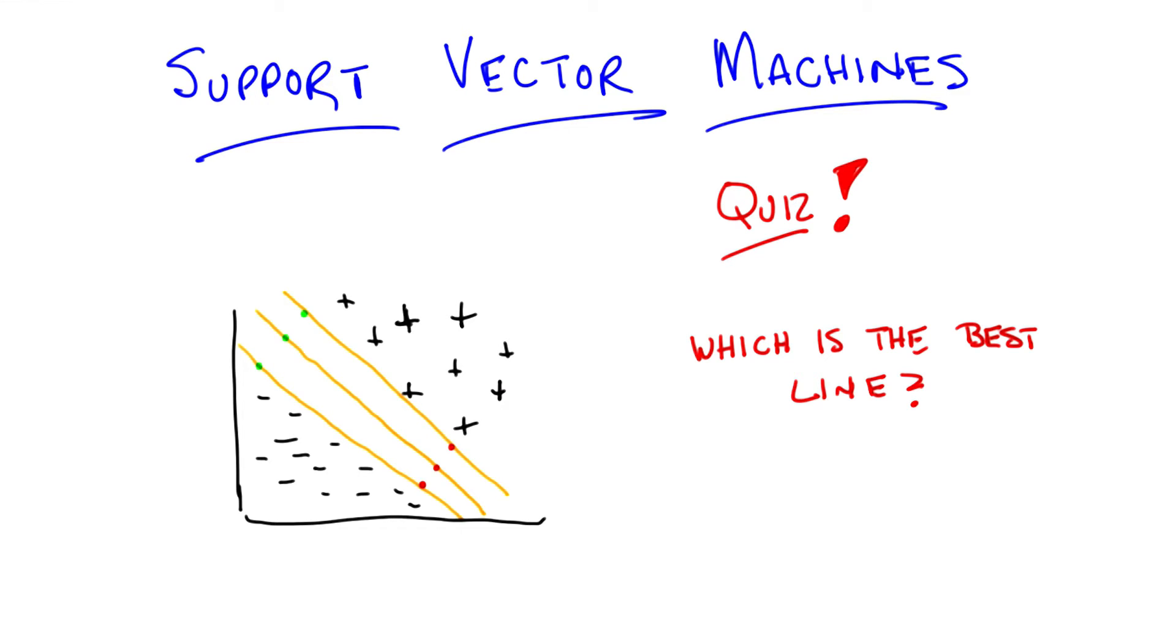Right. So, I can make the opposite argument with you, Michael, which is that, listen, they all separate the points. They completely explain the data as we see them. So, all three of those lines explain the data. In fact, all nine of those lines explain the data. So, why aren't they warranted by the data? What's the problem that you might run into if you put one line very close to the positives and one line very close to the minuses?